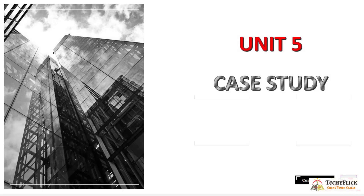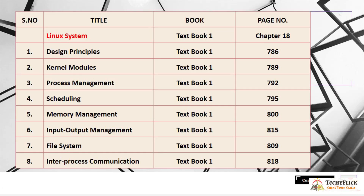Unit 5 is a Case Study. The first case study is Linux System, Chapter 18 from Textbook 1. Topics include: Design Principles at page 786, Kernel Modules at page 789, Process Management at page 792, Scheduling at page 795, Memory Management at page 800, Input Output Management at page 815, File System at page 809, and Interprocess Communication at page 818.